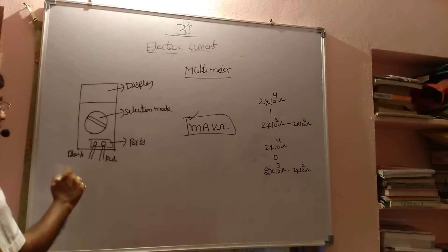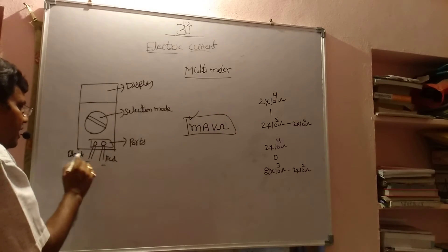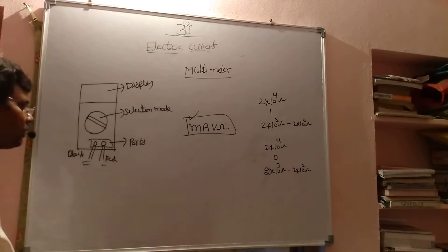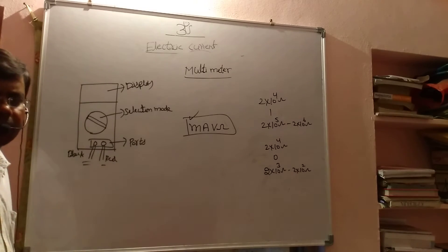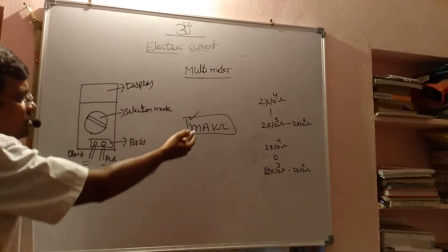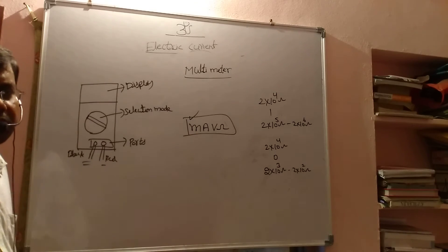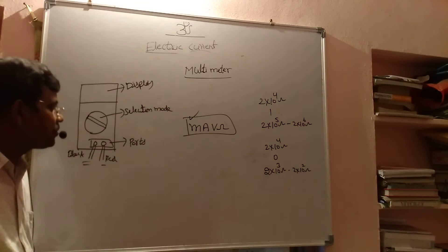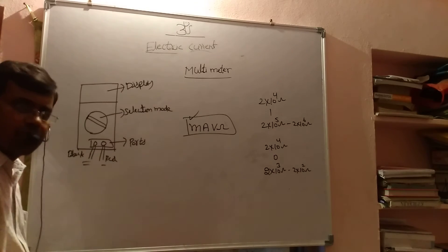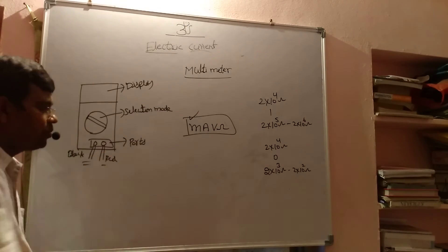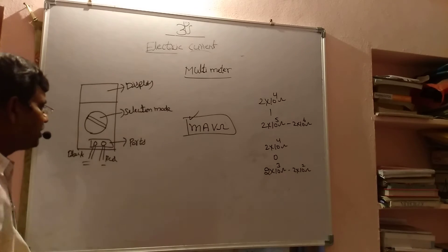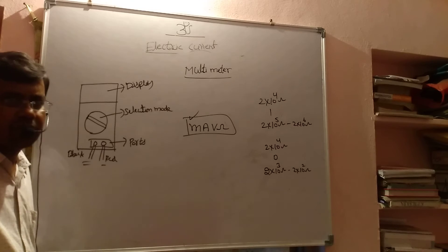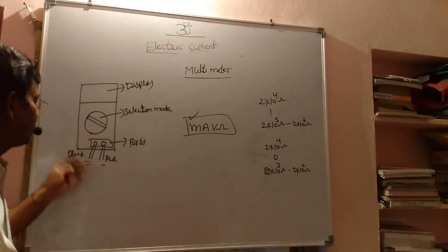Again, ports — here we are having two ports, one black color and one red color plug. The black color is the common port or ground port, and the red color port is whichever thing you are finding. If you want to find milliamperes current, use the milliammeter port. Voltage means voltage port, resistance means ohm port. Like that we are adjusting.